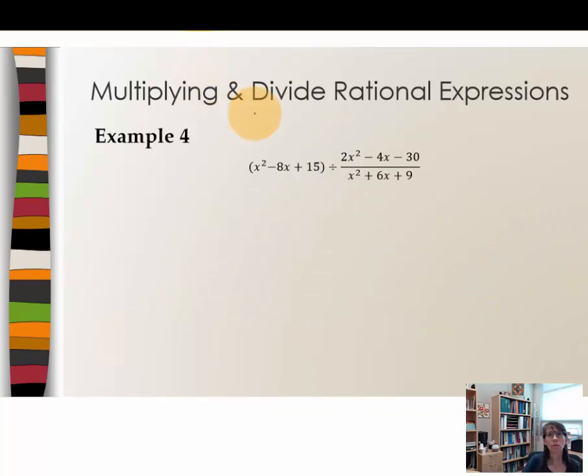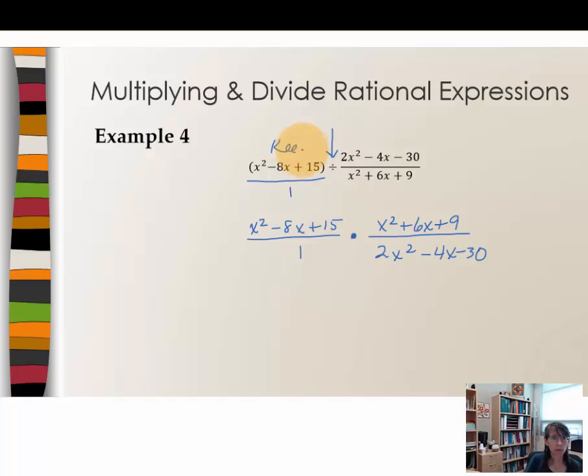We've got one more example because you can't really practice this enough. x² - 8x + 15 notices in a parenthesis all by itself. Do you recall that means the same thing is being divided by 1? Now that's going to help you to see this as a rational expression divided by another rational expression. So really what we have is x² - 8x + 15 over 1 multiplied by the reciprocal of this given rational expression. So now x² + 6x + 9 will be the numerator and 2x² - 4x - 30 is the denominator. Once you do the keep, change, and flip you're ready to do all the factoring.